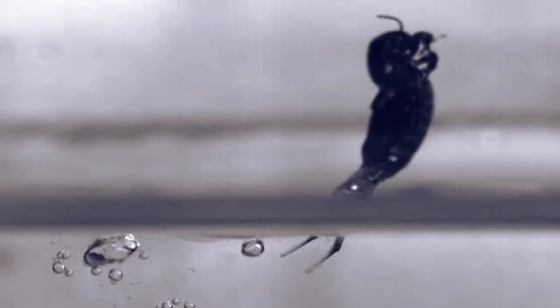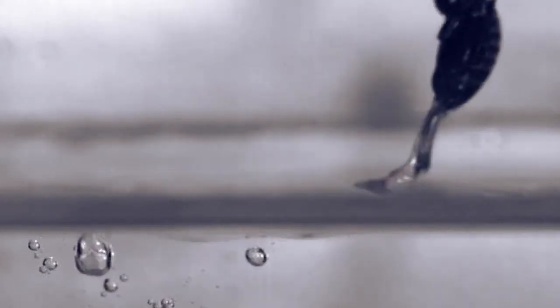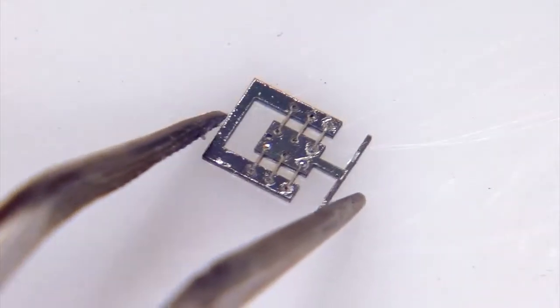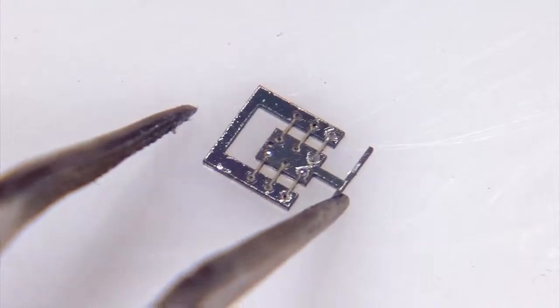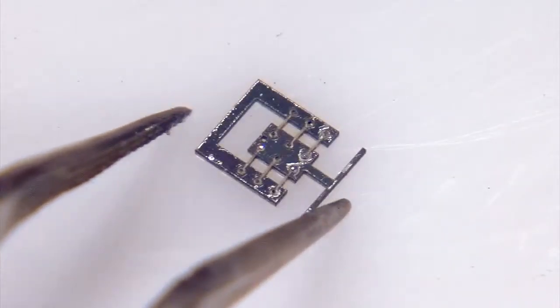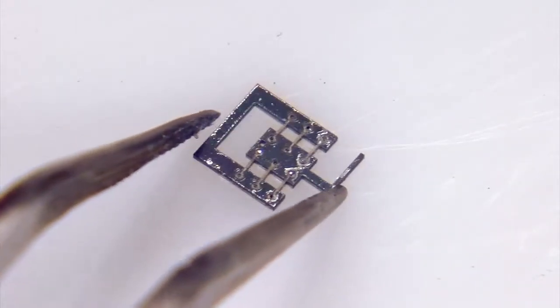Many insects jump to clear obstacles, so Bergbreiter is working to build that capability into some of the micro-bots. They can compress this and store energy in those rubber bands and release those for a jump.